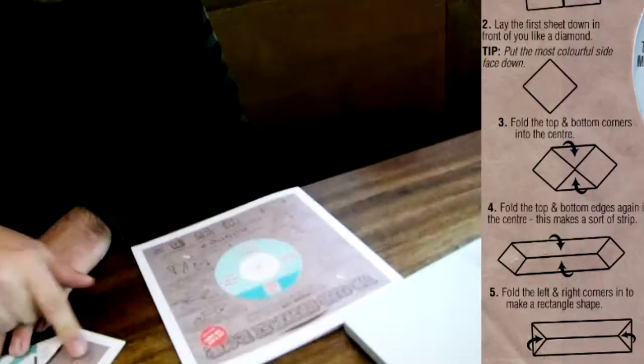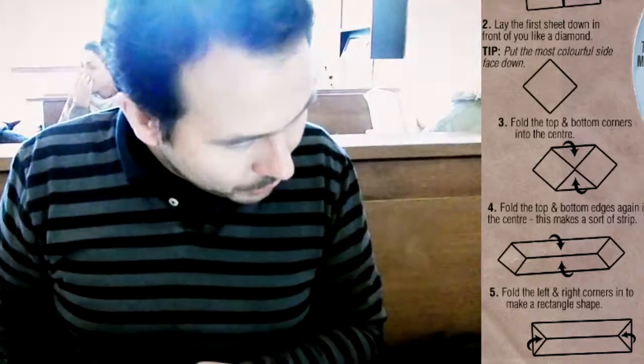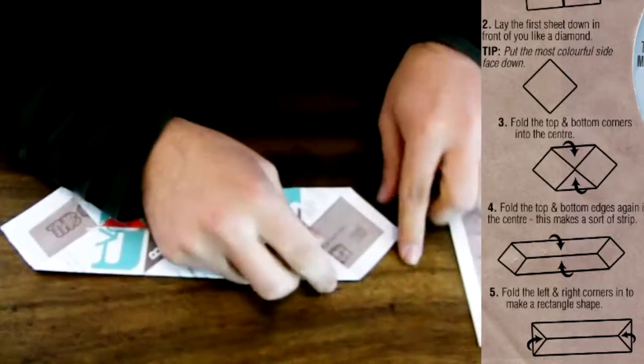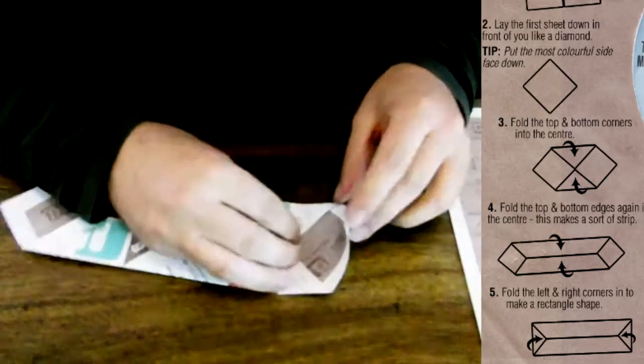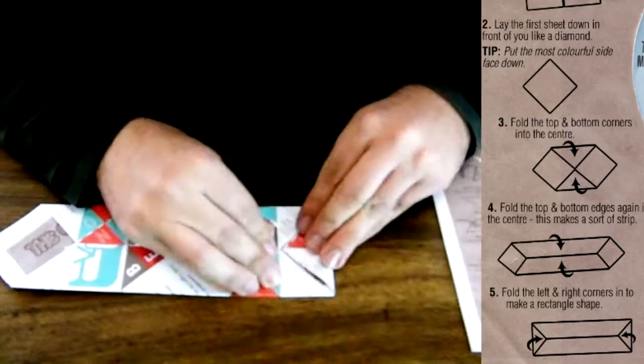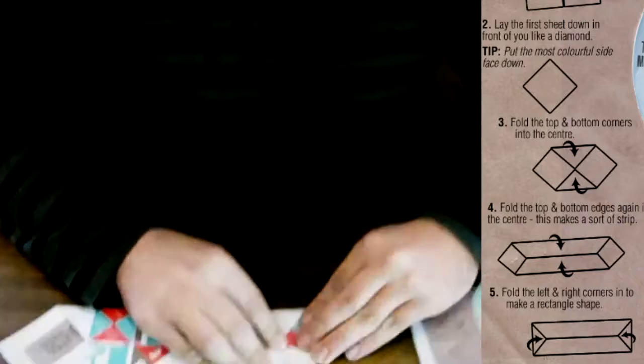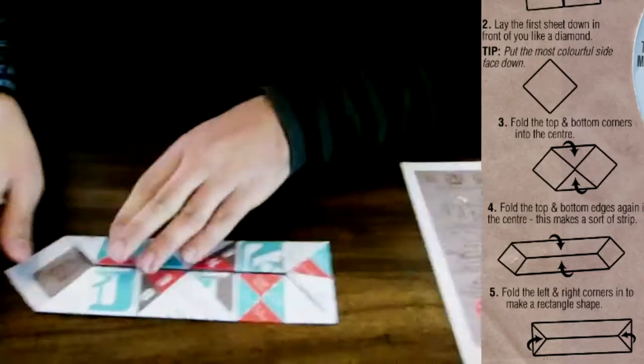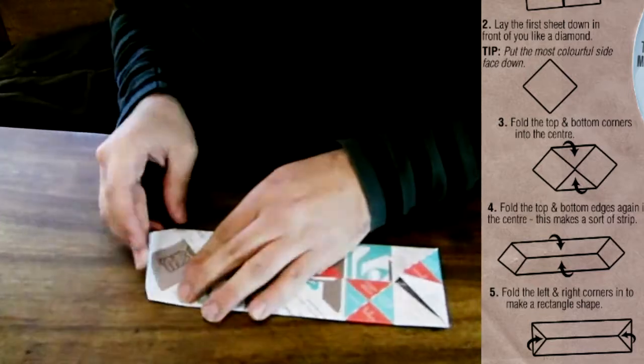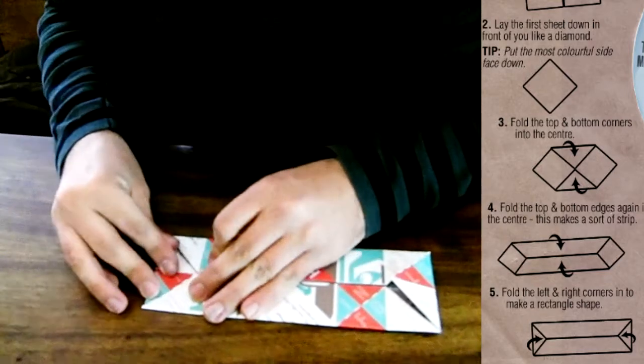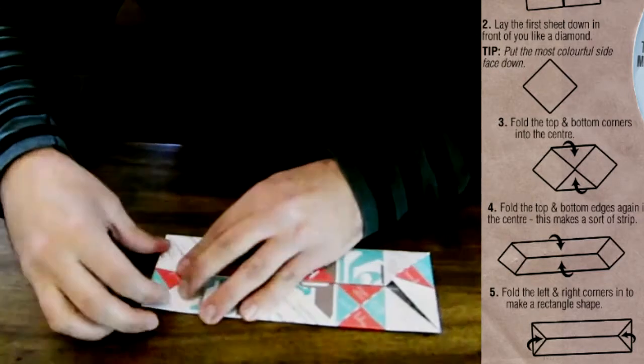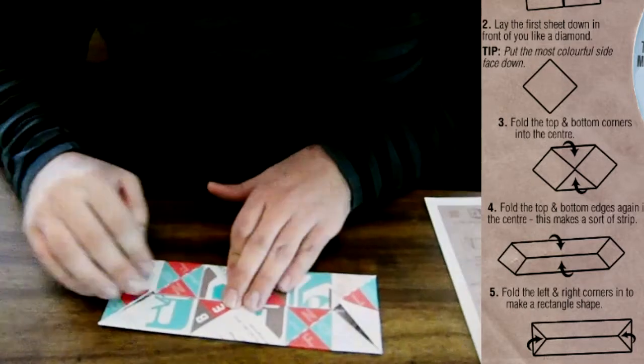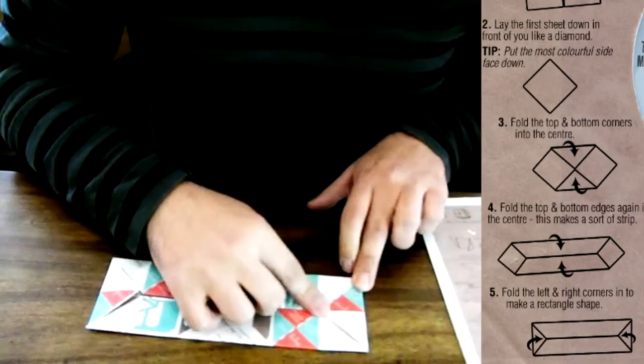Fold the left and right corners in to make a rectangle shape. So there's here another guide to fold. Imagine that there's a little arrow. Yes! A little arrow. There you go. On the other side. More arrows. Look in. Fold in.